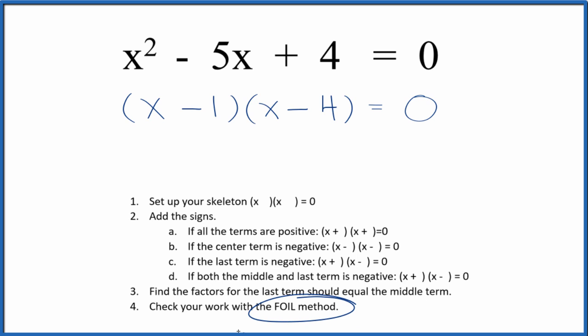But let's check our work with the FOIL method. First terms, x times x. Outside terms, x times minus 4x. Inside terms, negative 1 times x, that's negative 1x. And last terms, negative 1 times negative 4 gives us a positive 4.